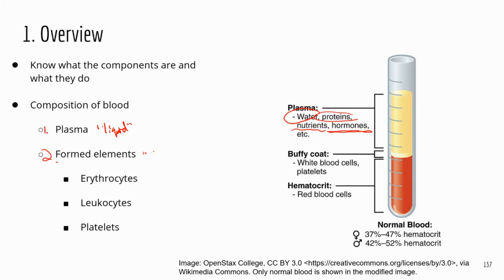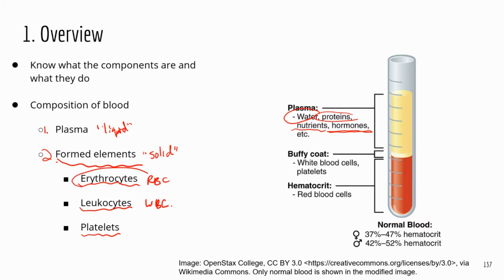The next main component of blood is the solid part. We call this part formed elements — basically they refer to the different blood cells. Erythrocytes are red blood cells. Leukocytes are white blood cells, and the platelets are not cells in a strict sense because they are only cellular fragments, but they do perform important functions. You do need to know the other names for red blood cells and white blood cells, because on TEAS the questions may very likely use erythrocytes and leukocytes instead.